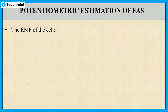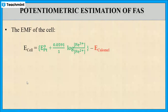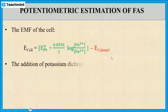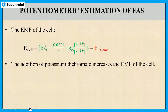Now let us see how to determine the EMF of the cell. E_cell = E_cathode − E_anode. The platinum electrode acts as cathode, so E_platinum = E⁰_pt + (0.0591 / 1) × log([Fe³⁺] / [Fe²⁺]) − E_calomel. In this equation, E_calomel is constant. As potassium dichromate is added, the concentration of Fe³⁺ goes on increasing, and hence E_cell is also increasing.